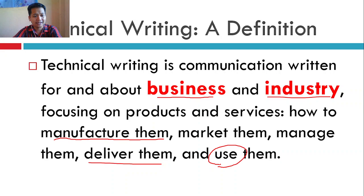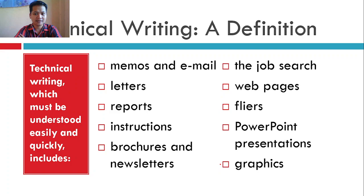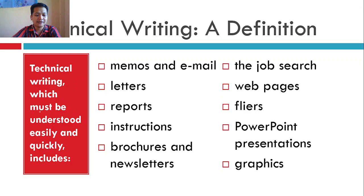What are the other examples of technical writing? You may see some of your answers listed here. We have memos, emails, letters, reports, instructions, brochures, newsletters, job search documents, web pages, flyers, PowerPoint presentations, and graphics. These are some examples of technical writing, but if your answer isn't on the list, it doesn't mean it's not technical writing — these are just some examples.